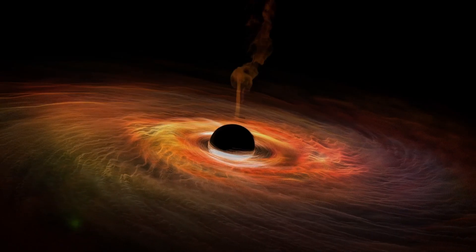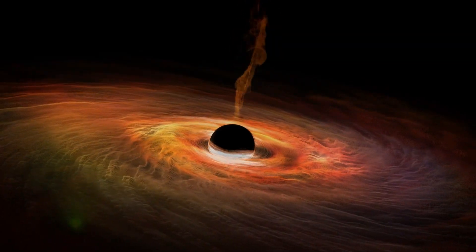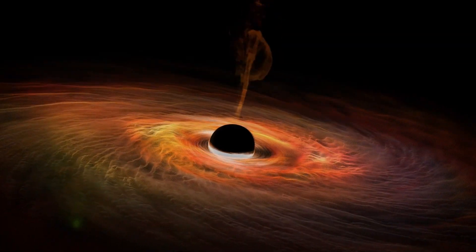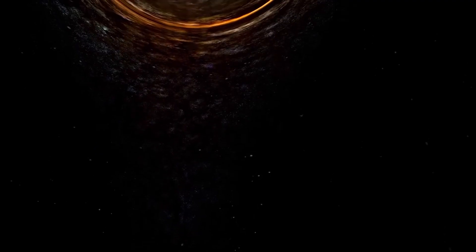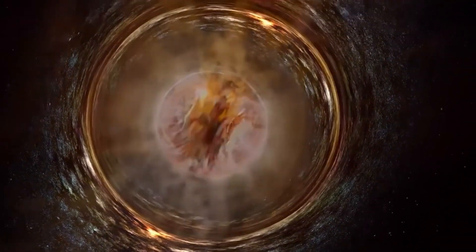Now, let's talk about one of the most famous predictions of general relativity, black holes. Black holes are objects with a gravitational pull so strong that nothing, not even light, can escape from them. The theory of general relativity predicts that black holes form when a massive object collapses under its own gravity, forming a singularity, a point of infinite density at the center.